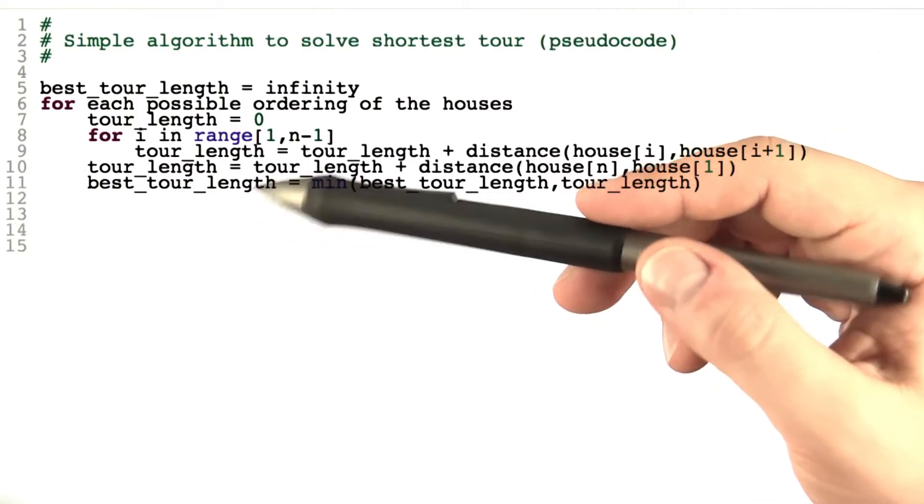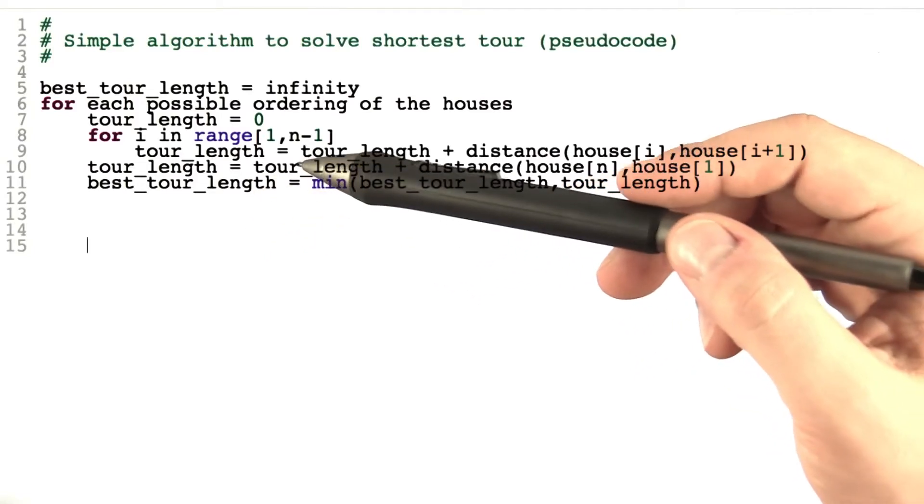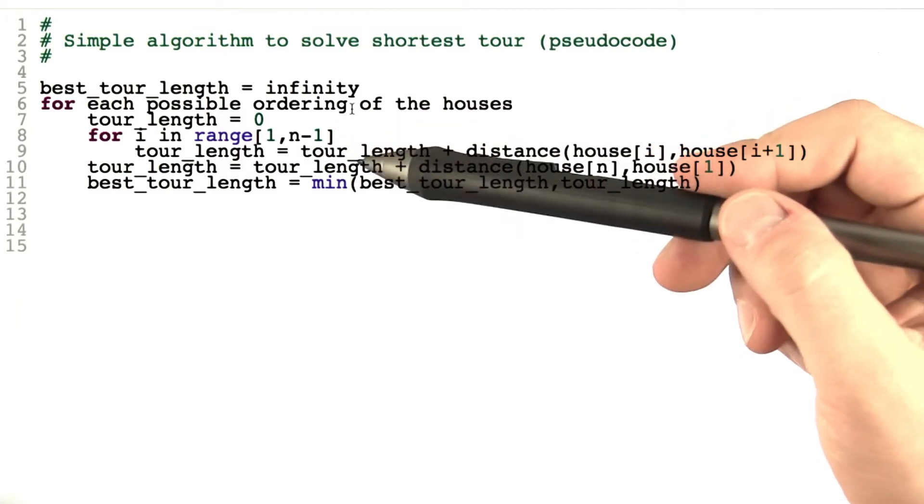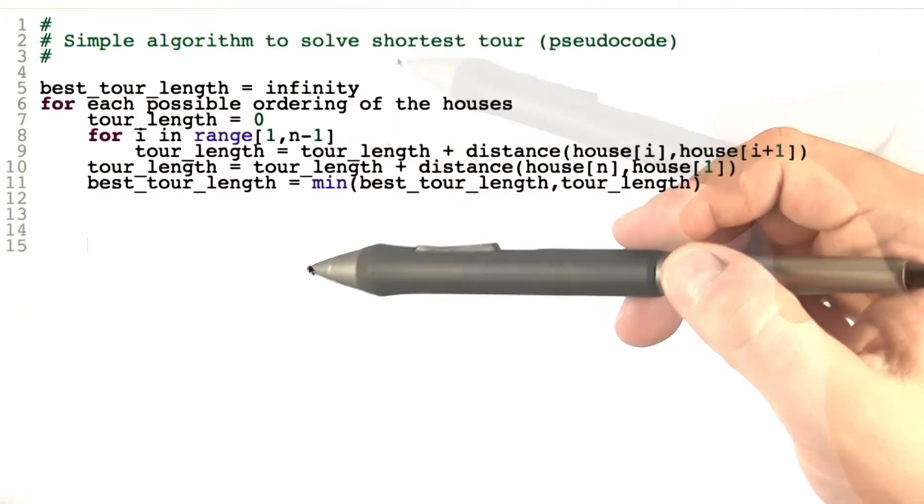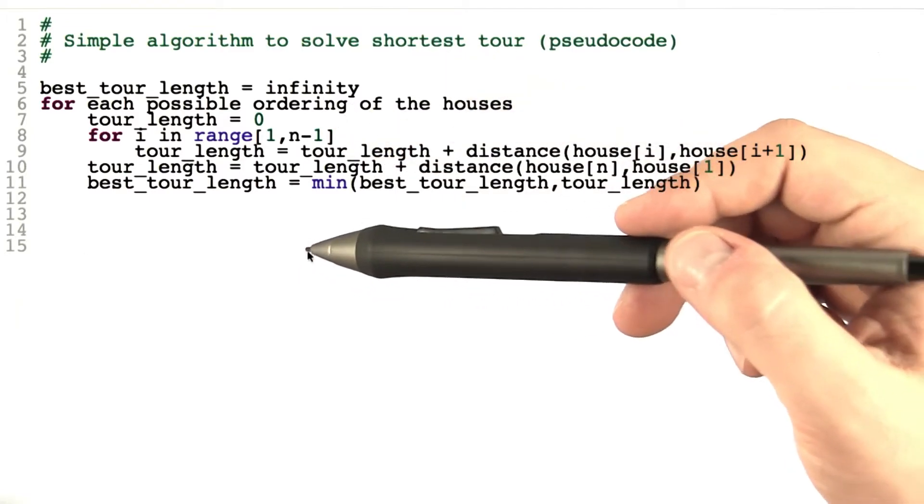So Dave has the same problem that Alice, Bob and Carol also had. If he uses a simple or naive algorithm to solve shortest tour, then this algorithm will not deliver an acceptable running time.